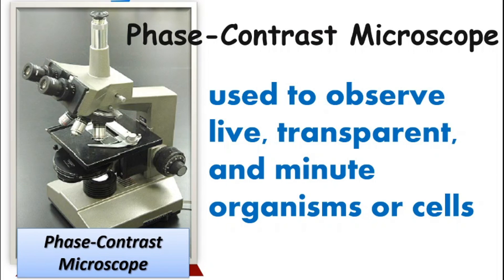Next is the phase contrast microscope. It is highly similar to the usual electric compound microscope in terms of appearance, except for its capability to change the position of light as it passes through a transparent sample. The changes brought by the phase shift in light cause changes in the brightness of the formed image. A phase contrast microscope is used to observe light, transparent, and minute organisms or cells and does not require staining the specimen.